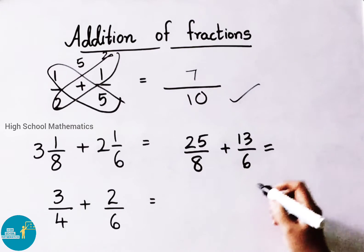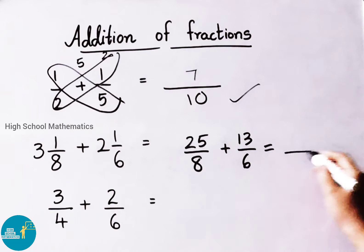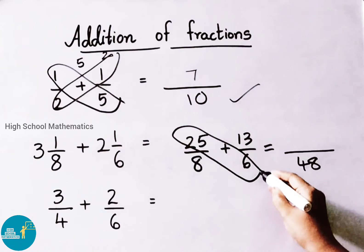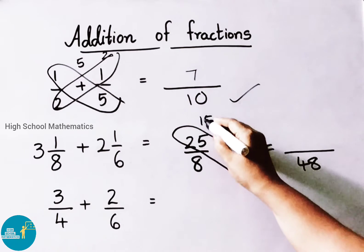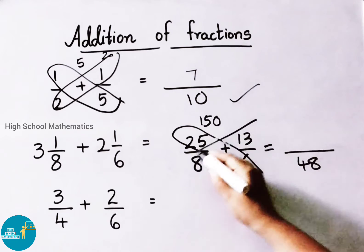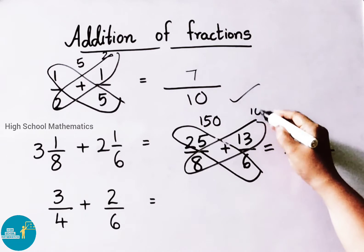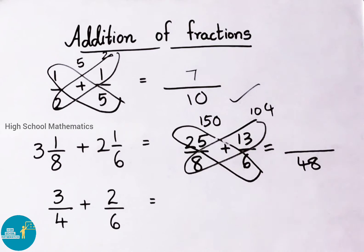That equals to 8 times 6 is 48. Now let us do cross multiplication. 25 times 6 is 150, 13 times 8 is 104.